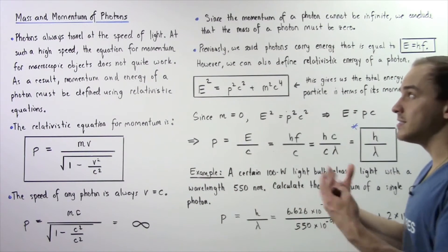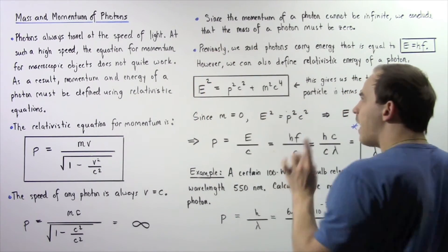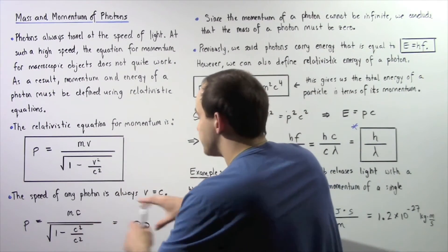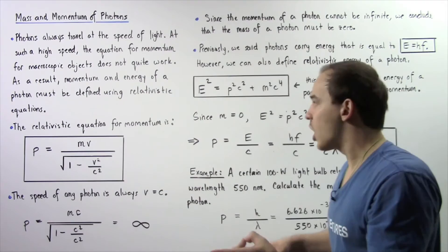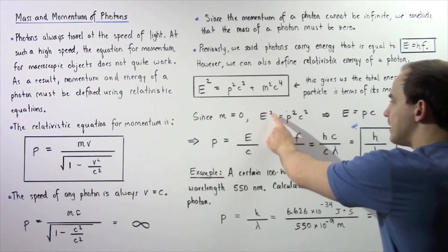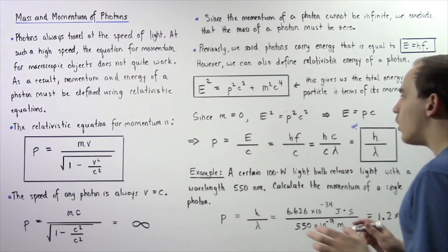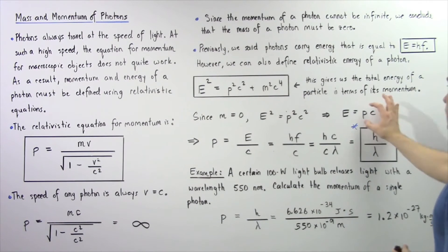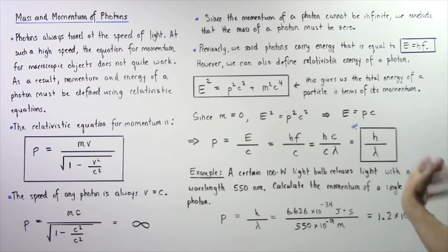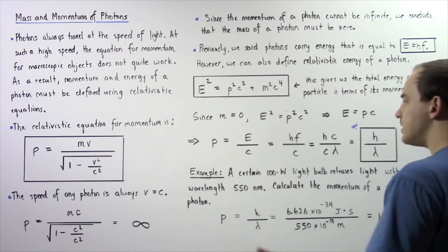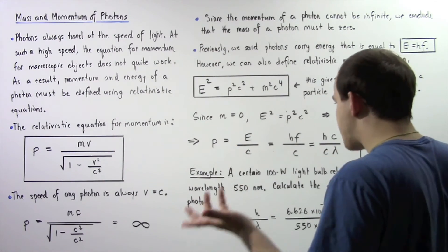Since a photon is a particle, let's use this equation to find the momentum of our photon. Recalling our earlier result, we know the mass of a photon is zero. So with M equals zero, the mc² term cancels out, and E² equals P² times C². Taking the square root of both sides, the energy of our photon equals P times C. Rearranging, the momentum of our photon equals the energy it carries divided by the speed of light.